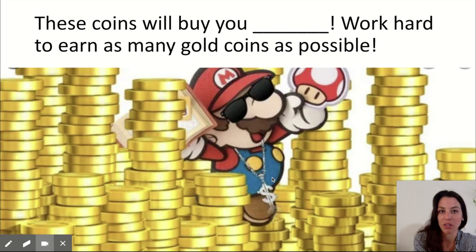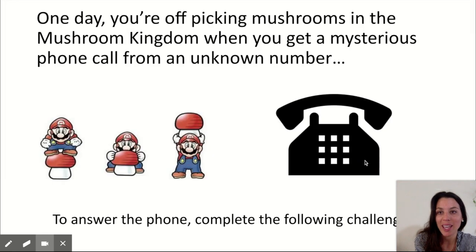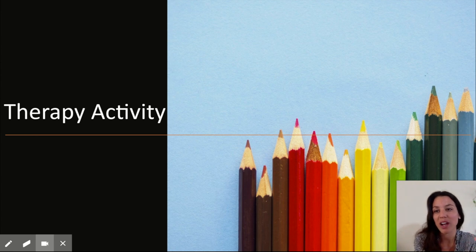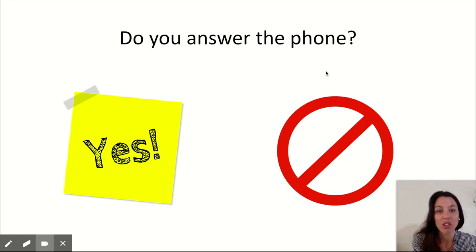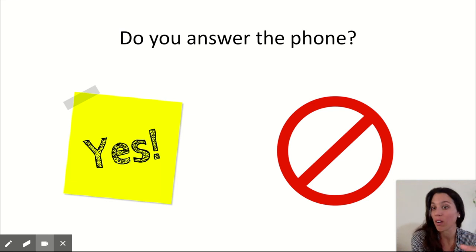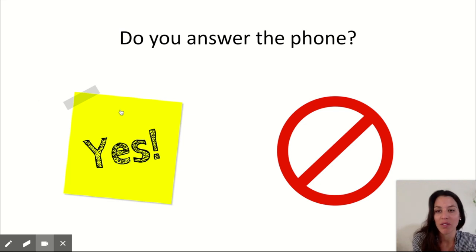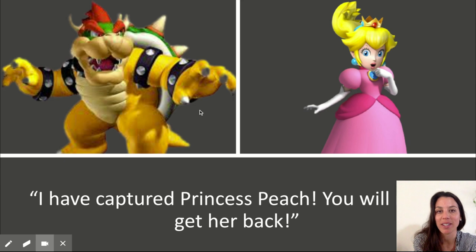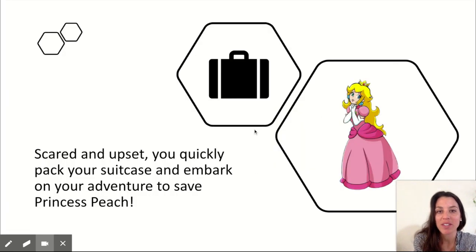You fill in what you want the gold coins to earn — for me it might be free time or a toy from the dollar store. The story begins: welcome to the Mushroom Kingdom. One day you're picking mushrooms when you get a mysterious phone call from an unknown number. To answer the phone, complete the following challenge — this is where you provide your therapy activity. You set the rules: if they do a good job, select yes; if not, select no. A good job depends on you — for a writing assignment, are all their letters sitting on the baseline? For a following directions assignment, are they using their listening ears?